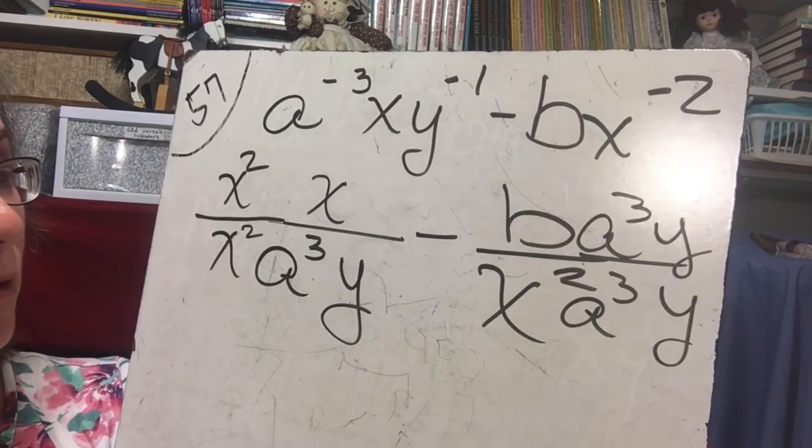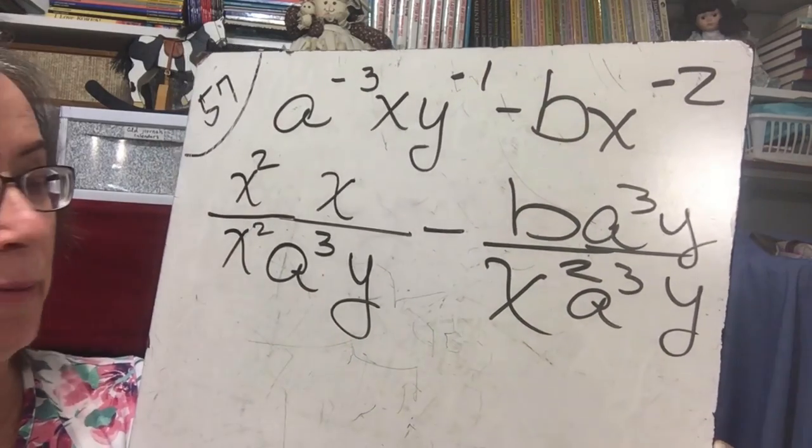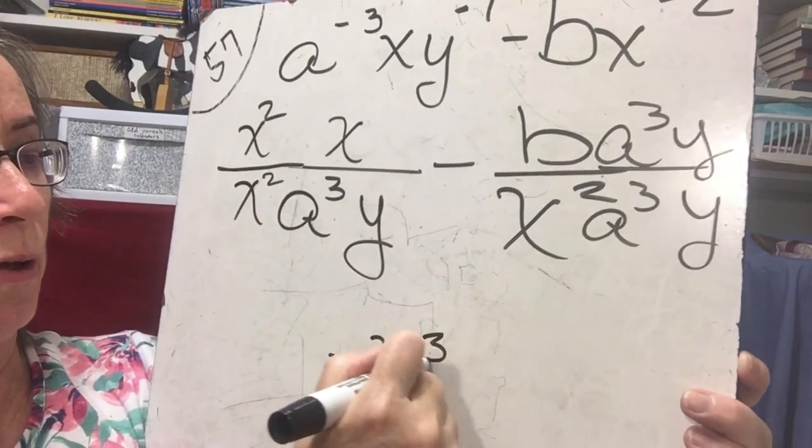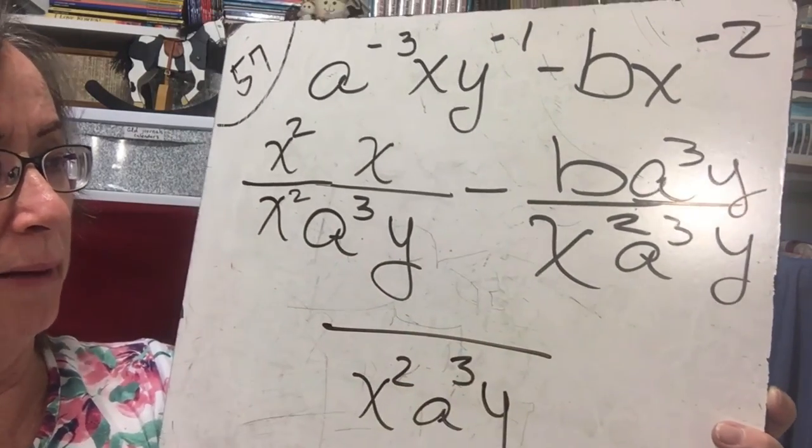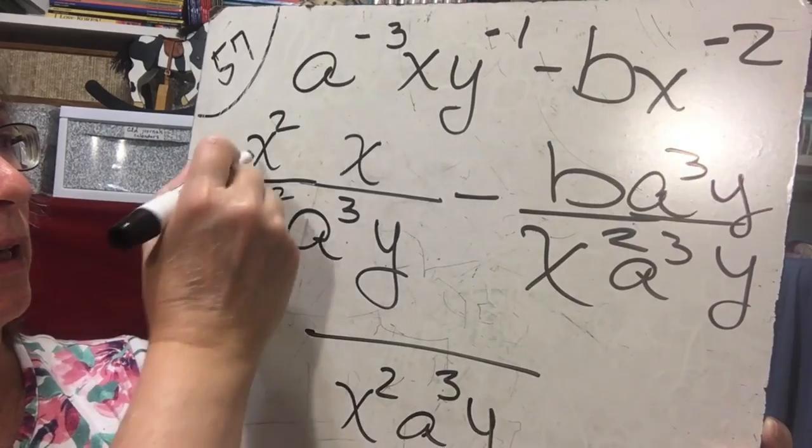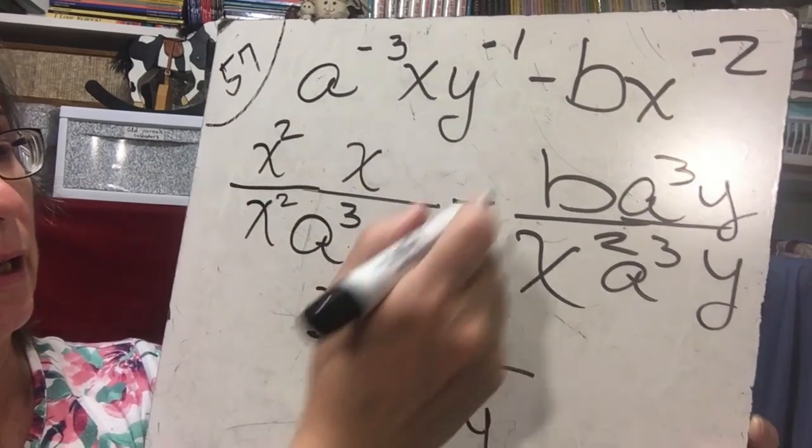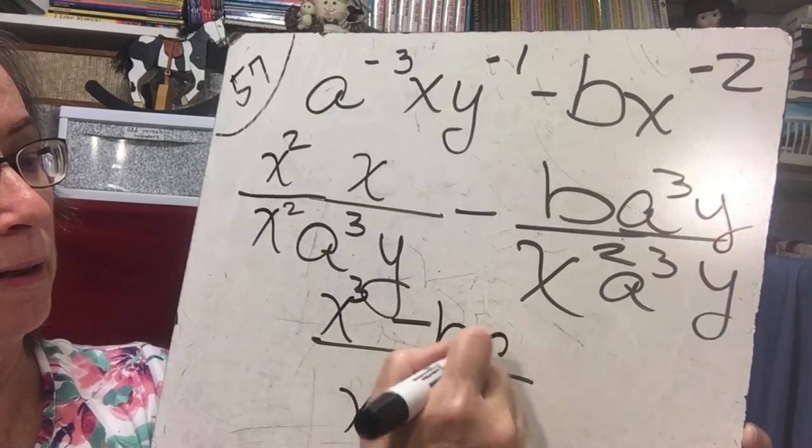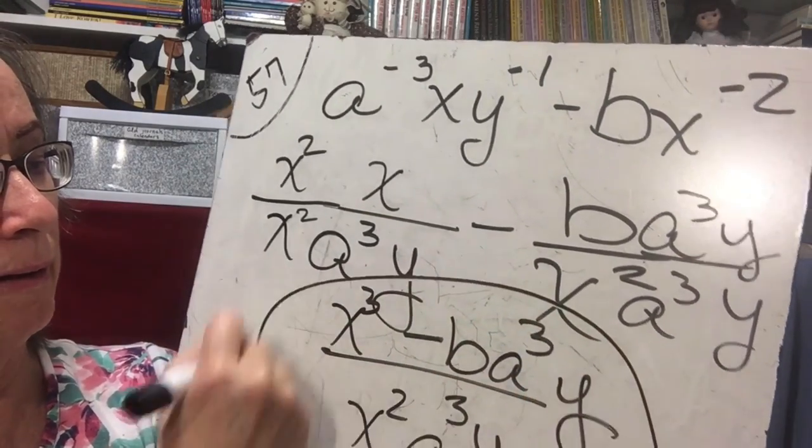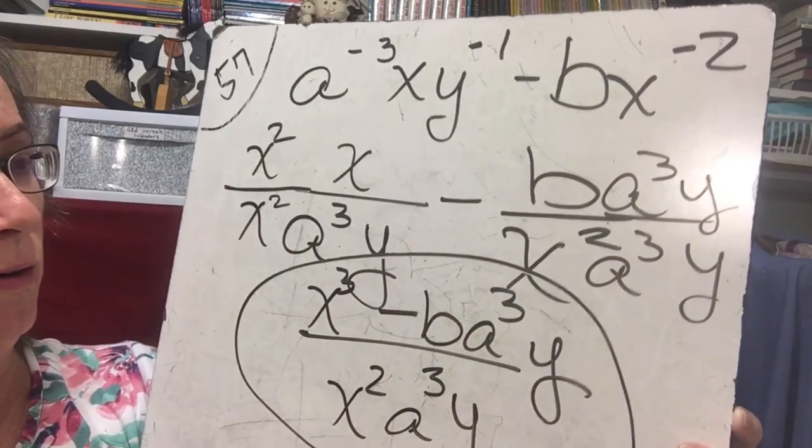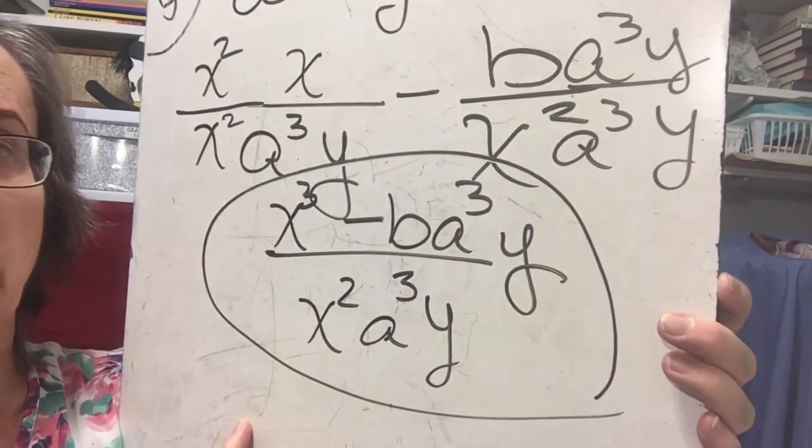Okay, so now we have the same denominator. So we're going to have x squared a cubed y on the bottom. On the top we're going to have x cubed minus b a cubed y. x cubed minus b a cubed y over x squared a cubed y.